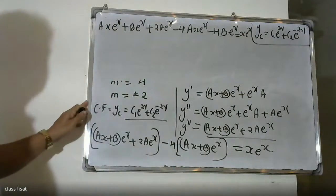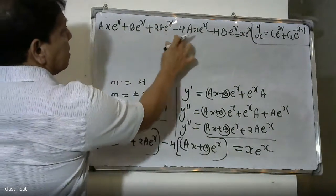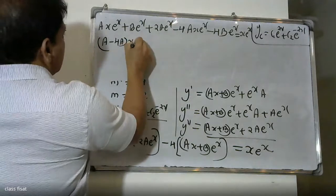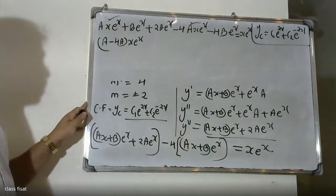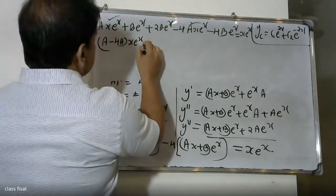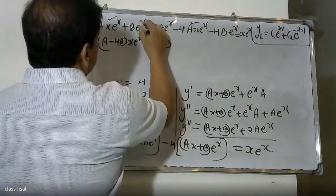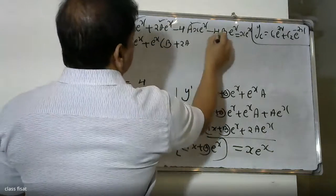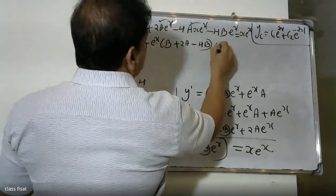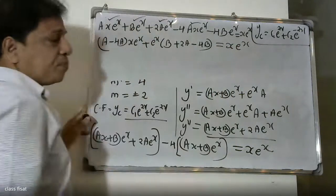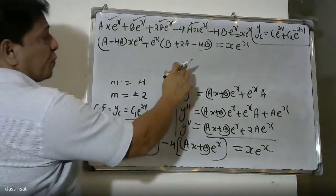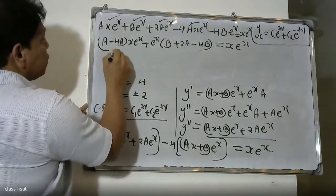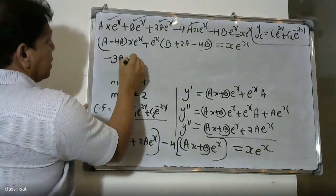Now we equate coefficients. Grouping the x into e raise to x terms: the coefficient of x into e raise to x on the left-hand side is a minus 4a, which must equal 1 from the right-hand side. So minus 3a equals 1, giving a equals minus 1 by 3.